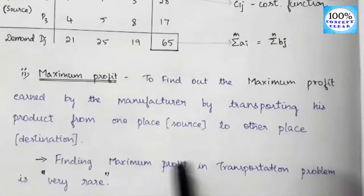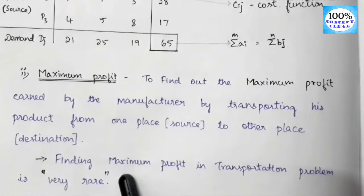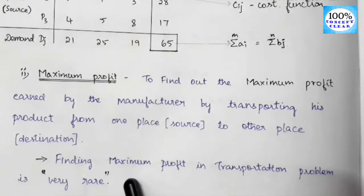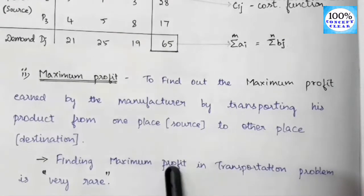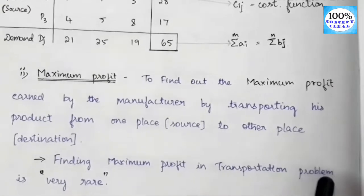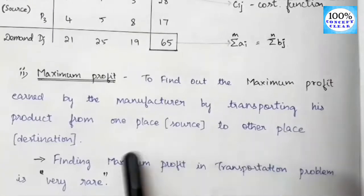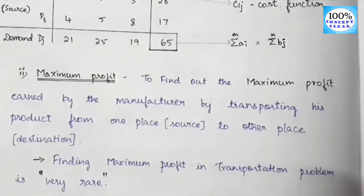Finding maximum profit in transportation is very rare. Transportation of goods always involves various types of costs — labor cost, vehicle cost, maintenance cost — so it is difficult to find profit. That is why finding maximum profit in transportation is rare, and minimizing cost is always the default objective in transportation problems.